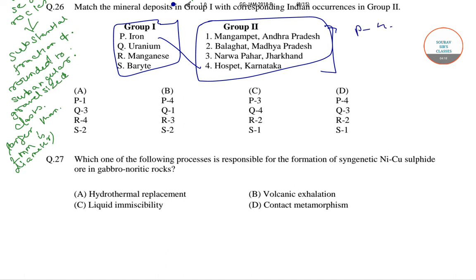Similarly, uranium deposits are usually found in Narwapahar, Jharkhand, so with uranium it is Q3. Manganese deposits are usually found in Balaghat, Madhya Pradesh, so R2. And the remaining one, barite, is usually found in Mangampet, Andhra Pradesh, so S1. The correct combination is P4, Q3, R2, and S1.